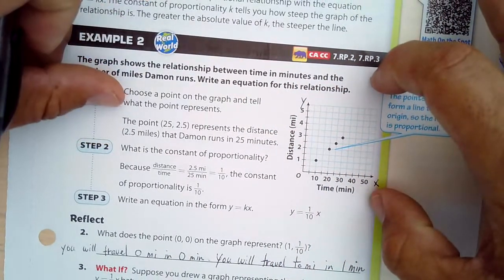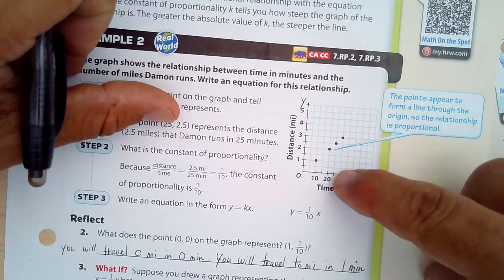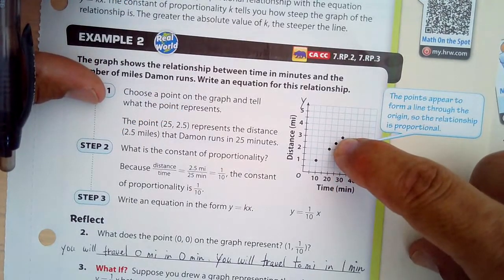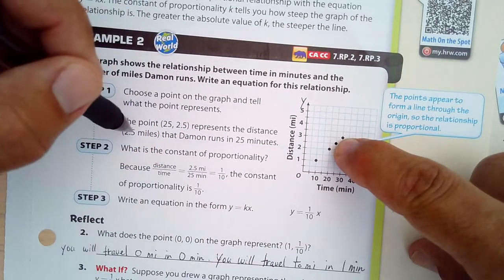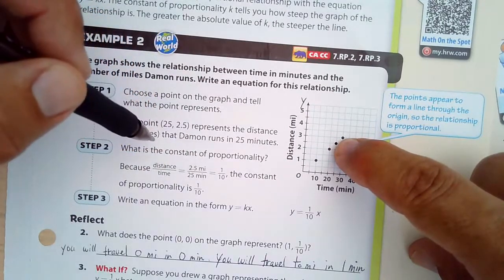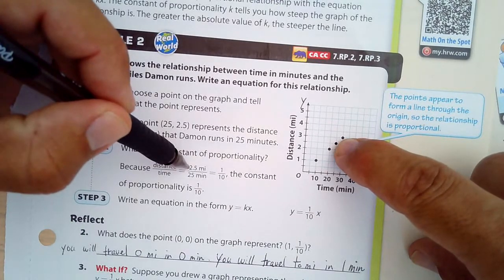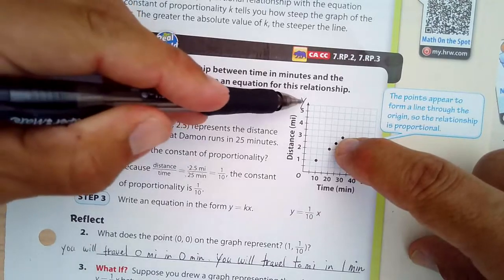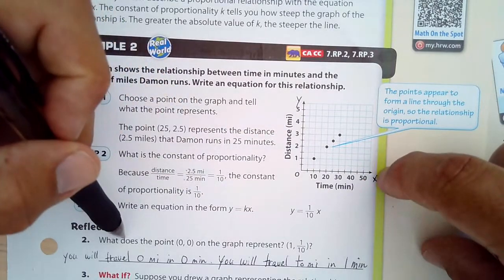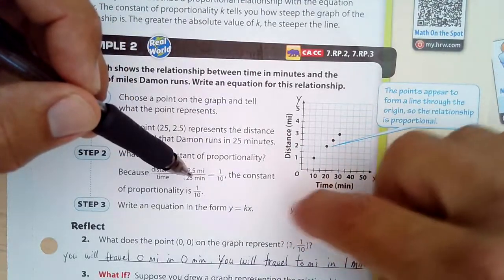Choose a point on the graph. We're going to choose the point 25 and 2.5, that one right there. It represents the distance, 2.5 miles, that Damon runs in 25 minutes. What is the constant of proportionality? You take the y value, which is 2.5, over the x value, 25. The y value over the x value right there. And then you write your equation. That simplifies to one-tenth. So this is our equation right here.